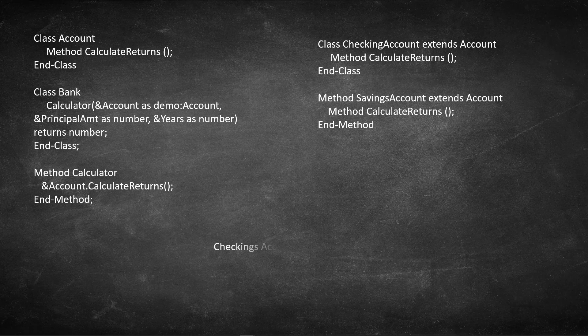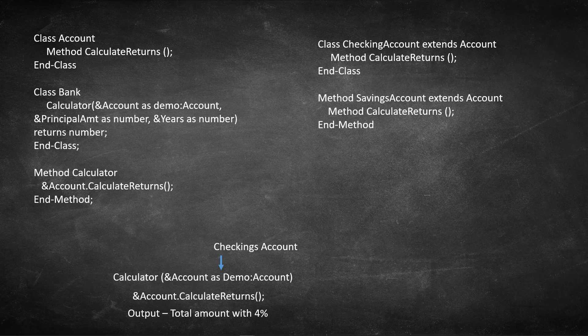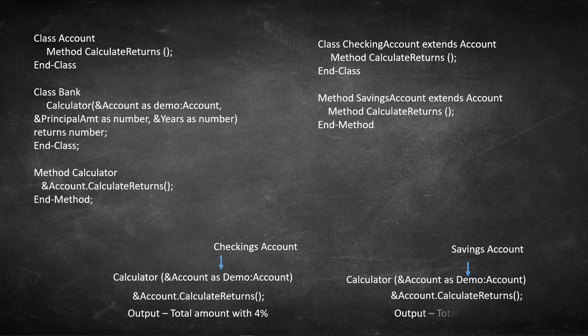After that, without touching the core logic, we are going to pass an instance of checkings account class in place of account. By doing that, the system will automatically execute the calculate method defined inside checkings account. Likewise, when we pass an instance of savings account in place of account, the system automatically kicks off the calculateReturns method defined inside savings account class. This is how I am going to demonstrate the polymorphism concept.